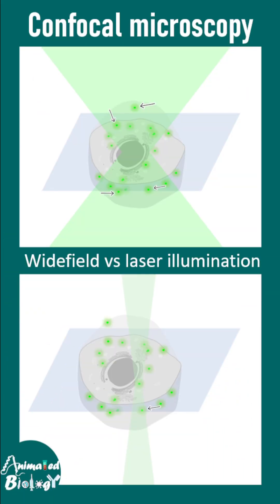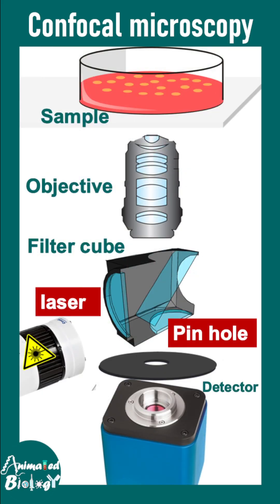In confocal microscopy we use laser instead of normal light. Normal light cannot be focused into a very narrow volume, but laser, being coherent, can be focused into a very small volume, which reduces the chances of non-specific illumination.